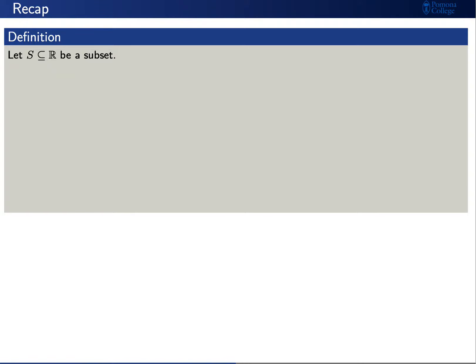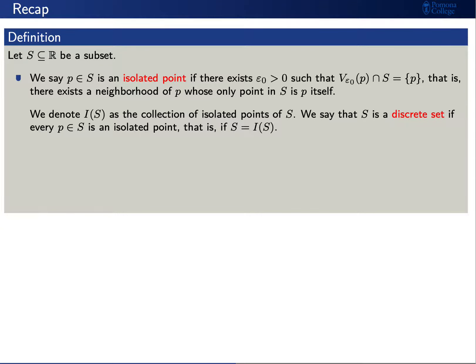Let's say that S is a subset of the real numbers. We'll say that a point p in S is an isolated point if there exists a neighborhood of p, namely V sub epsilon-naught of p, whose only point in S is p itself. We'll denote I(S) as the collection of isolated points of S.